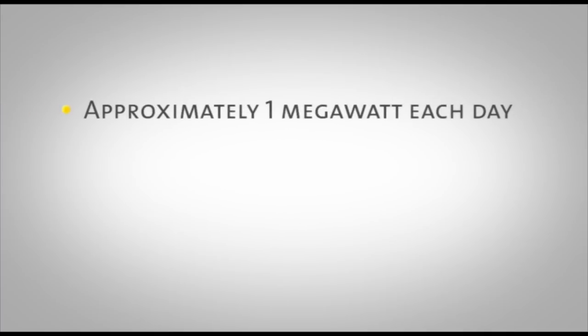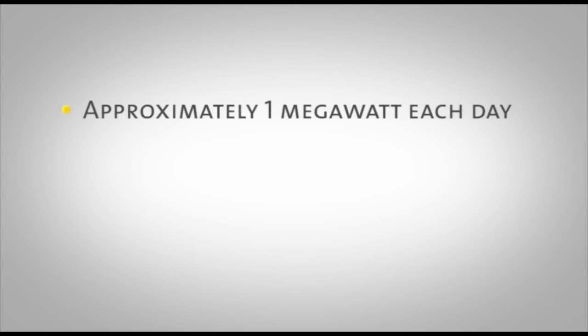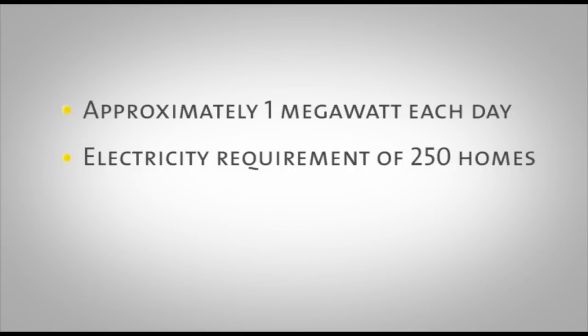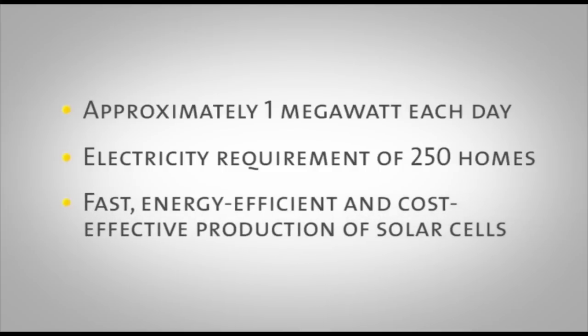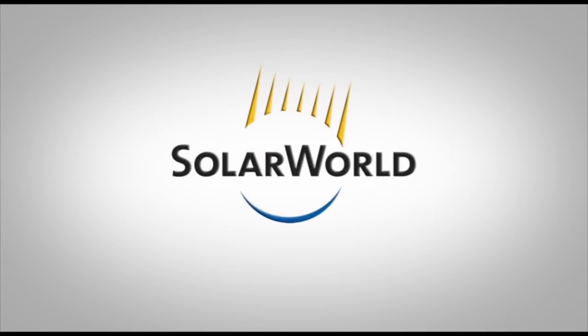This is how Deutsche Cell in Freiburg manufactures around 1 megawatt of solar cells every day. Enough solar cells to power 250 homes. Solar cell production can hardly be any faster or more energy and cost efficient. This is what we at Solar World stand for. We turn sunlight into power.